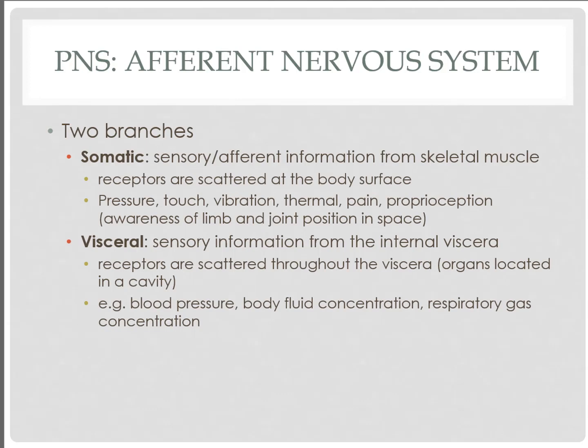The same pathways follow for the peripheral nervous system — the afferent pathways still follow the same branches. We have somatic as well as visceral. Somatic will have sensory afferent information from the skeletal muscle itself. These are receptors generally located all throughout the body surface, such as the feeling of touch from any parts of our body.